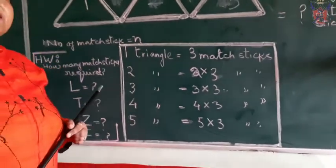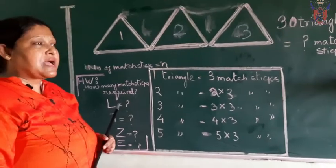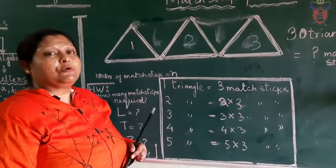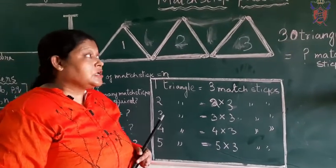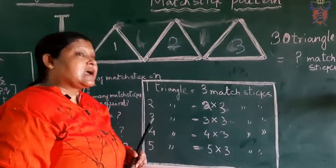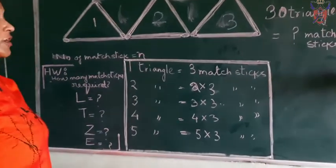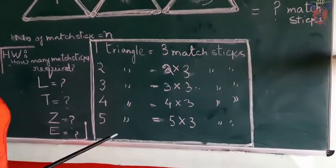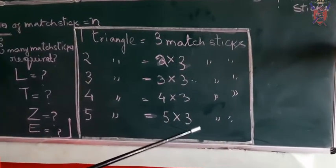But when we are giving the largest number, suppose 30 matchsticks, 60 matchsticks, how will you count? It will be very lengthy. So we always use some formula. We can count it in this way also, but in algebra we can use some variables.